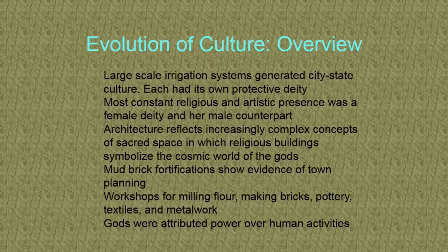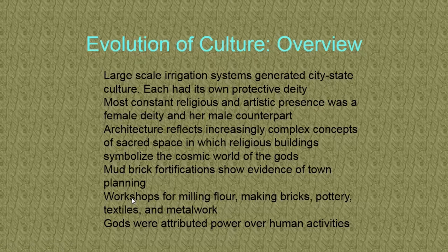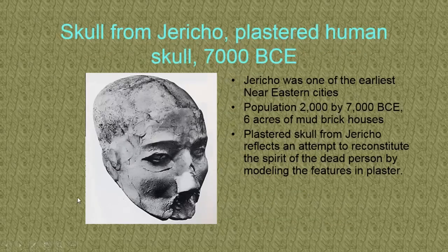Usually we have two protective deities — a male figure and a female figure together, which goes along with what I said about the Sumerians thinking of their gods like humans with superpowers. You start seeing complexity in their architecture and sacred space — religious buildings as a symbol of the cosmic world of the gods. They used mud bricks; archaeologists find foundations and extrapolate what the cities were like from that. They found evidence of people making flour and making bricks, so we know how this civilization worked. The Sumerians believed the gods had power over specific human activities — there would be a god for the bricklayers, for instance.